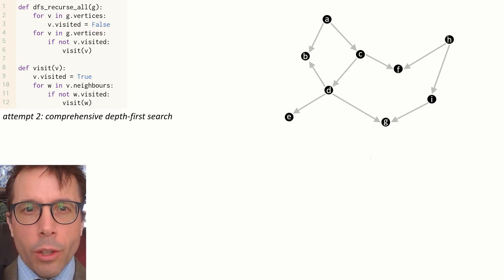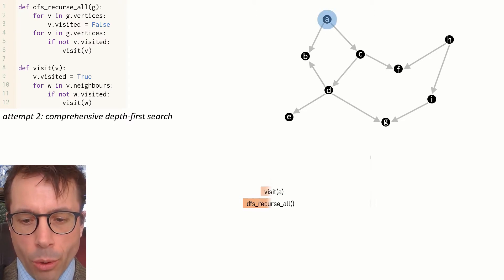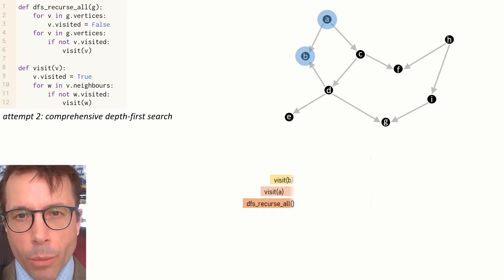I'm going to run through this code again step by step, but this time I'm going to draw out the execution trace and note down which function we're currently running. Start off by calling dfs_recurse_all. The first function it calls is visit A, and I'll draw that with a little horizontal bar above the bar for dfs_recurse_all.